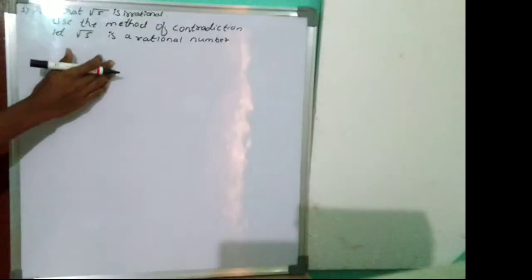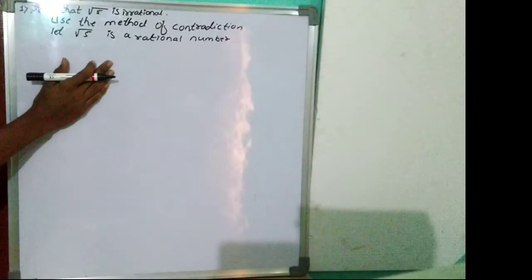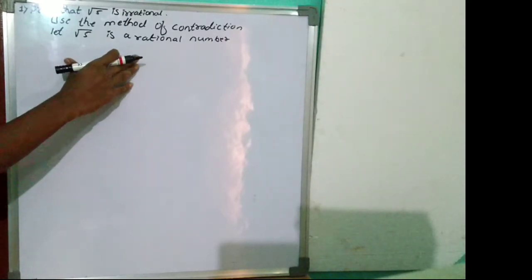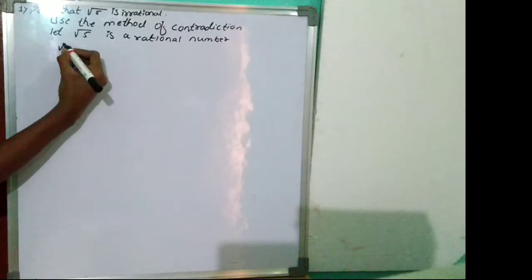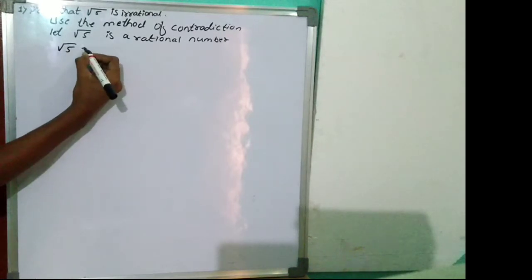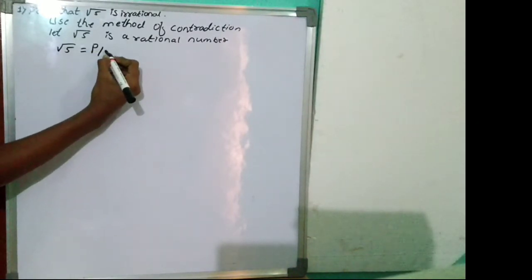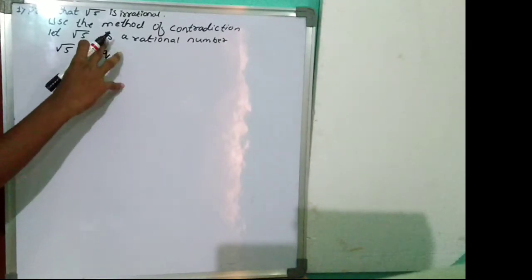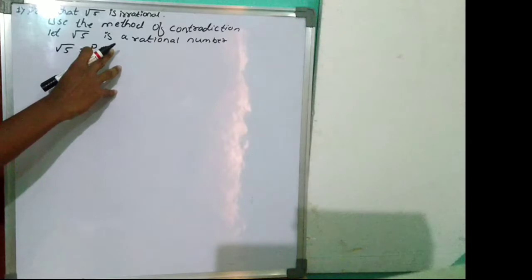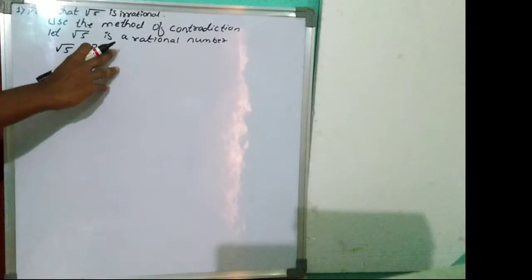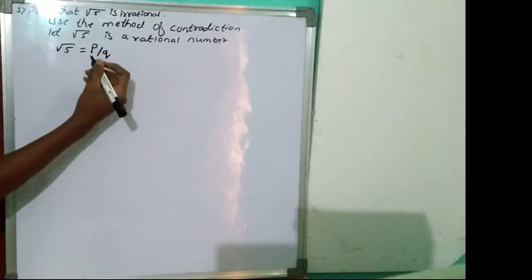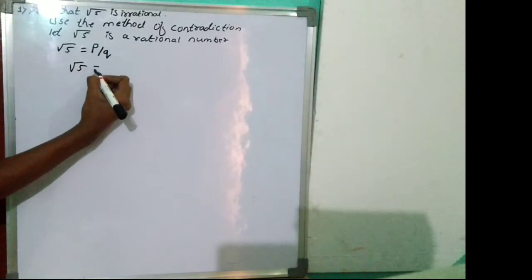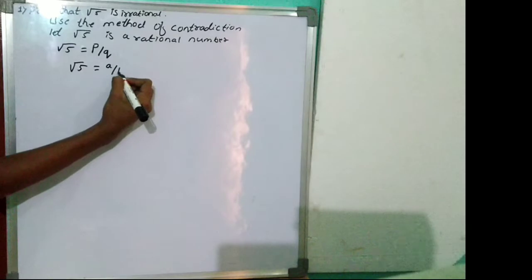A rational number can be written in the form of p by q, where q is not equal to 0. So root 5 equals p by q. Since p and q may have common factors, we cancel them to get root 5 equal to a by b, where a and b have no common factors.